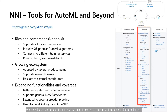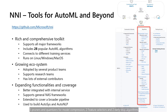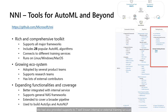We have released 28 popular built-in AutoML algorithms, which covers various aspects of the AutoML lifecycle, including 12 tuners for hyperparameter optimization, 7 algorithms for neural architecture search, 5 pruners and quantizers for model compression, 2 feature selectors, and 2 early stop algorithms. We have also provided support for 7 well-known internal or external training services.